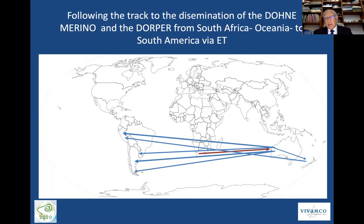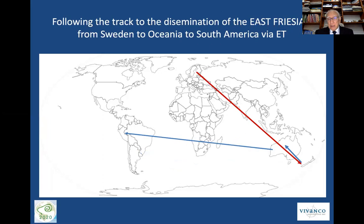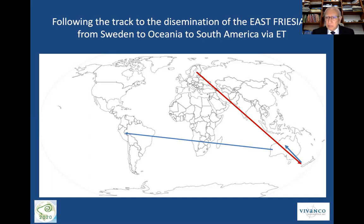Following the track of the Duni and the Dorper from South Africa is another interesting flow. It was done from South Africa to Australia, from Australia to New Zealand, and from Australia and New Zealand to many countries in South America. The East Frisian was also introduced from Scandinavia to New Zealand, from New Zealand to Australia, and from Australia to Peru and from Peru to neighboring countries. The Scandinavian countries were the providers of genetics that went to Oceania because of the scrapie-free situation. But even being free, the quarantining system has to be very rigorous.